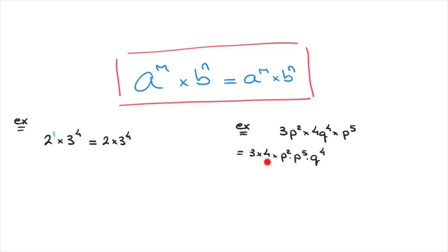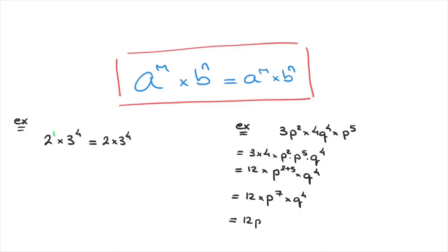We have 3 times 4, which is 12, times p to the power of 2 times p to the power of 5, which using the rule we've learnt is p to the power of 2 plus 5, times q to the power of 4. That equals 12 times p to the power of 7 times q to the power of 4, and finally that's equal to 12p to the power of 7 times q to the power of 4.